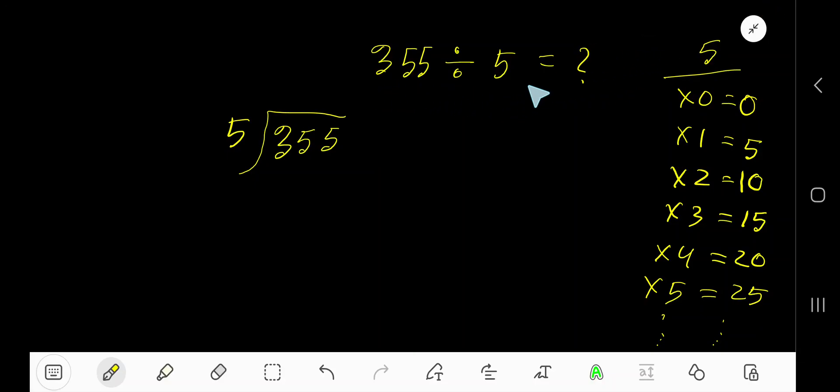355 divided by 5. Here 5 is the divisor, so we need the multiplication table of 5. 5 times 0 is 0, 5 times 1 is 5, 5 times 2 is 10, 5 times 3 is 15. To find the multiplication table of 5 easily, just add 5 to the previous step: 0 plus 5 equals 5, 5 plus 5 equals 10, 10 plus 5 equals 15.